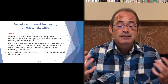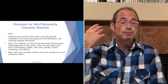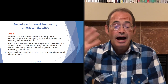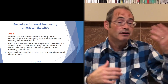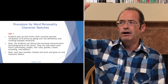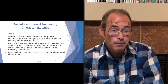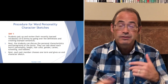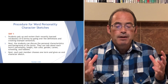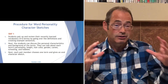Step two: the students discuss the personal characteristics and backgrounds of the terms — each term's personality, height, hair color, gender, career, schooling, and hobbies. Sometimes I list these on the board so they can fill them in; sometimes we add film, movies, favorite food, things like that. Step three: each pair member chooses one of those terms and gives an oral character sketch — person A gives their sketch to person B, and then person B gives his or her character sketch to person A.